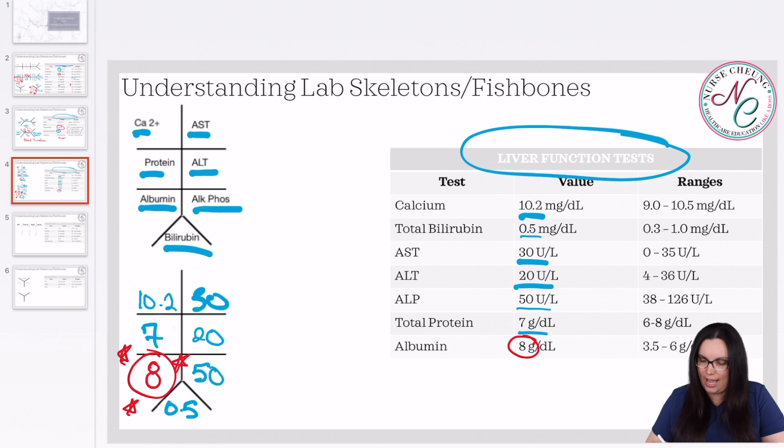So that just gives us again, depending on who's rounding and who's consulted, a key look at what's going on. Because a physician will come to you and say, Hey, what are my liver function tests look like? And if you write them out individually, not using this fishbone, you're going to have to find what's included in that liver function test, right? Whereas this is a great key to help you be able to speak to those physicians without having to struggle to find the answers.